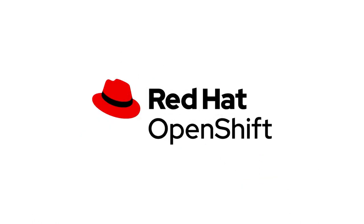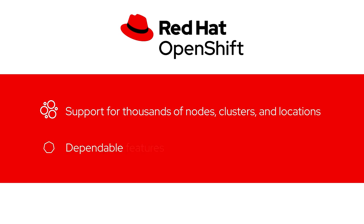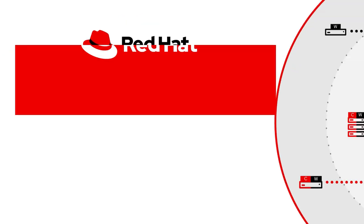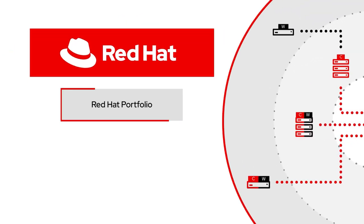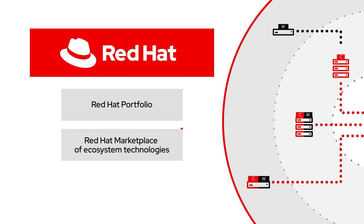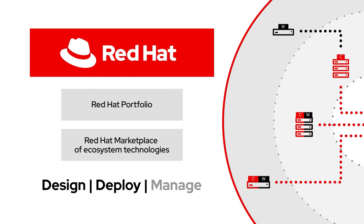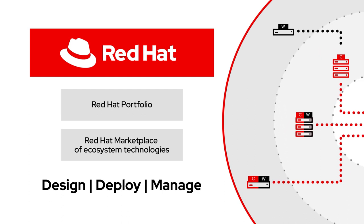With Red Hat OpenShift, you get support for thousands of nodes, clusters, and locations, and the dependable features and functionality that Kubernetes is known for. And when you bring it together with Red Hat's broad portfolio and Red Hat Marketplace of ecosystem technologies, we make it easier to design, deploy, and manage applications consistently across all sites.